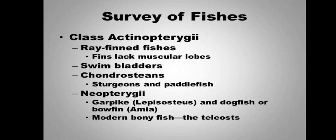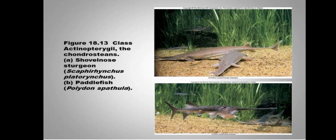Last class of super class Gnathostomata is Actinopterygii। इसमें ray-finned fishes आती हैं — ray-finned fishes means they have fins but they lack muscular lobes। इनके पास gas exchange के लिए lungs की बजाय swim bladders हैं। इनकी आगे sub-classes में Chondrostei आते हैं — जिनमें sturgeons और paddlefishes आती हैं — और Neopterygii, जिसमें gar pike, bowfin fishes, और teleost bony fishes आती हैं।